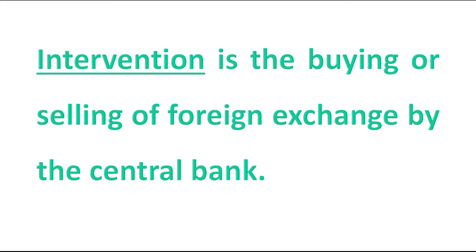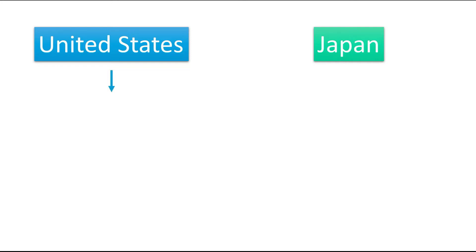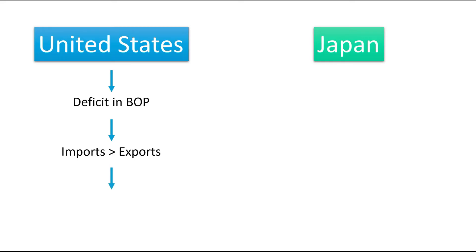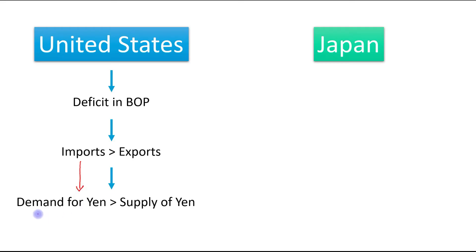Let's take an example with the United States on one side and Japan on the other. Assume there is a deficit in the balance of payments of the United States. Deficit means imports are greater than exports — specifically, imports from Japan are greater than exports to Japan. This means the demand for Japanese currency, that is the demand for yen, is greater than the supply of yen.